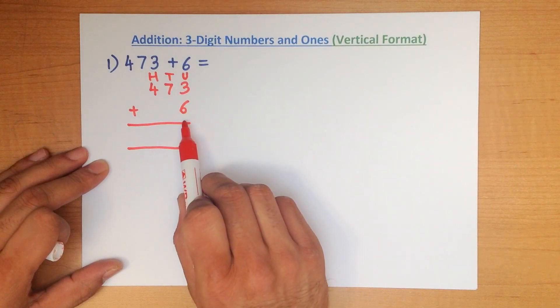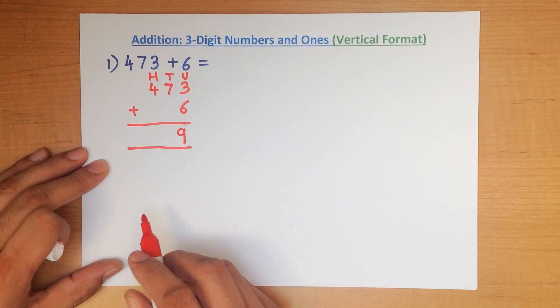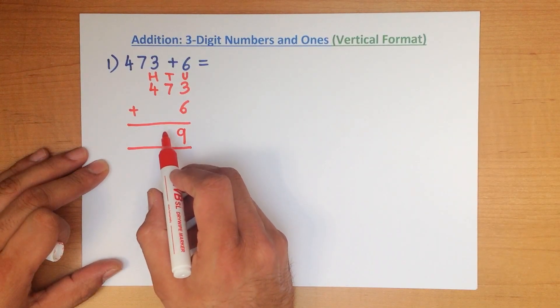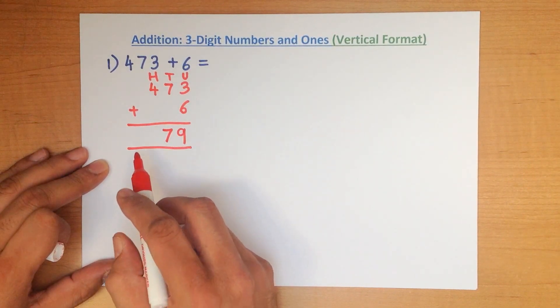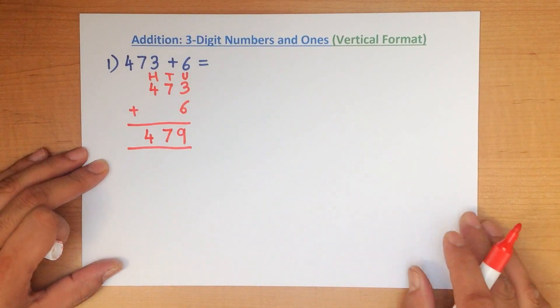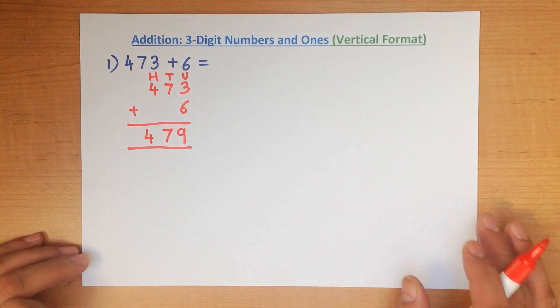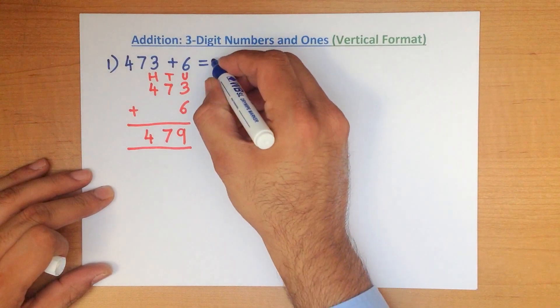So what is 3 plus 6? That's right, it is 9. The next one is easy. 7 plus 0 is 7. And 4 plus 0 is 4. And it is as simple as that. 473 plus 6 is 479. So let's write that down.